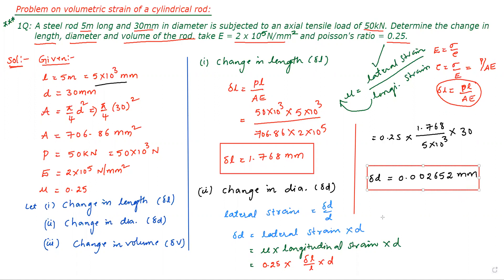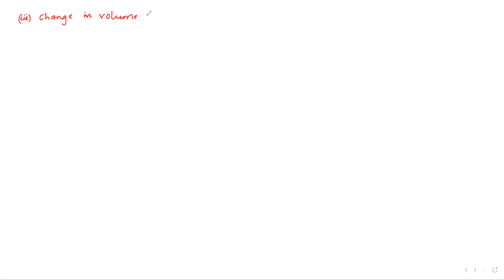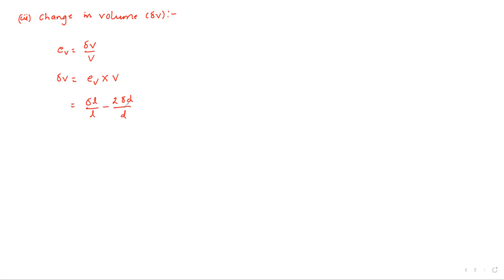Next, calculate change in volume δV. Volumetric strain = δV / V, so δV = volumetric strain × original volume. For a cylindrical rod, volumetric strain = (δL/L) − 2×(δD/D). Original volume = π/4 × D² × L.